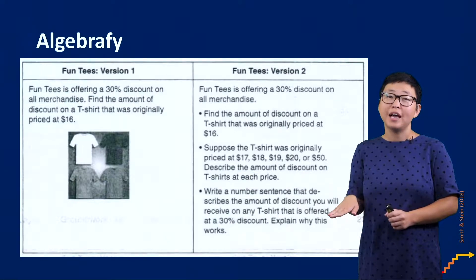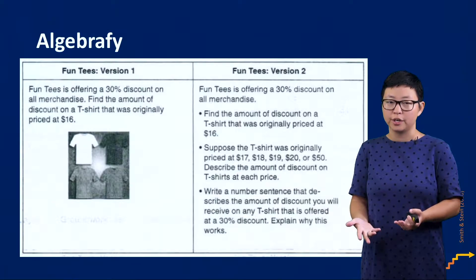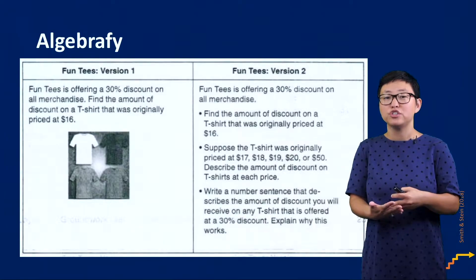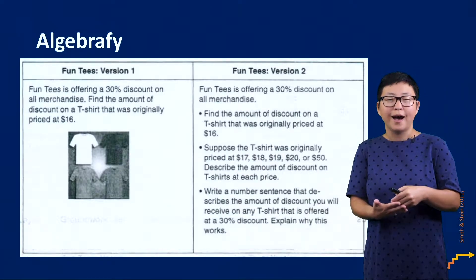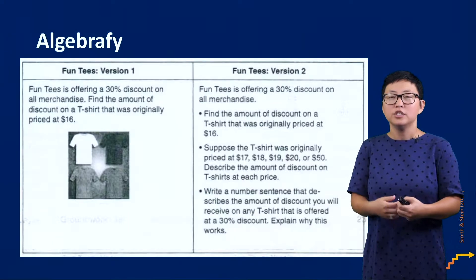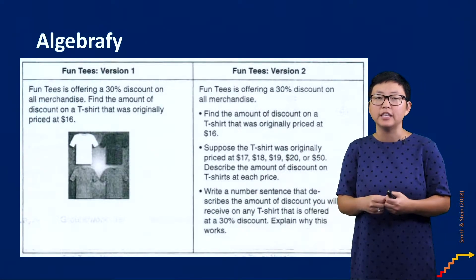This task then goes to another level in which students are then asked to consider the price of any t-shirt. So here they're now looking for patterns and they're starting to generalize this rule or this relationship between the price of the t-shirt and the discount offered. So you can compare these two tasks and see how they require different types of thinking from students.